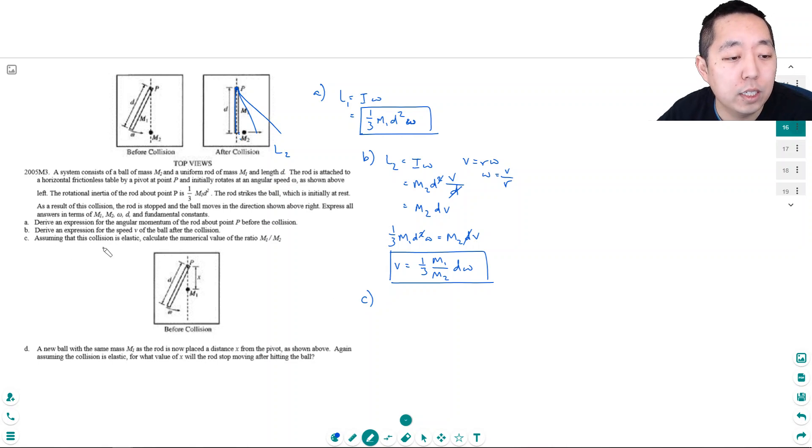Part C: Assuming that the collision is elastic. What does elastic mean? It means mechanical energy is conserved. So I'm thinking I've got to do some kind of conservation. Calculate the numerical value of the ratio m1 over m2. So the second piece of information that they're telling you is that during this the energy is conserved. So let's kind of set up what's the energy before.